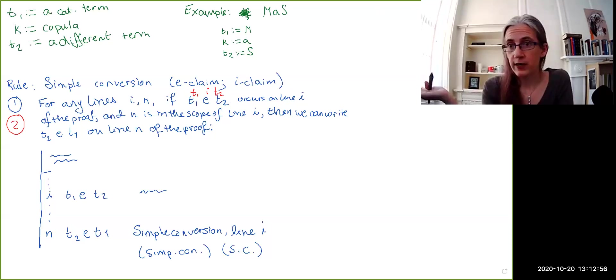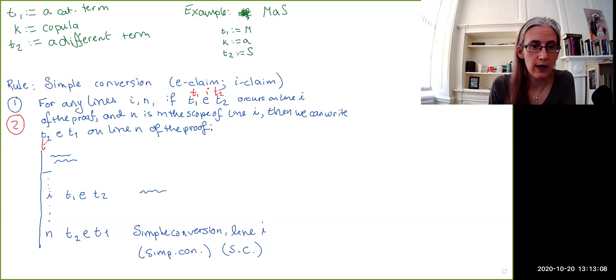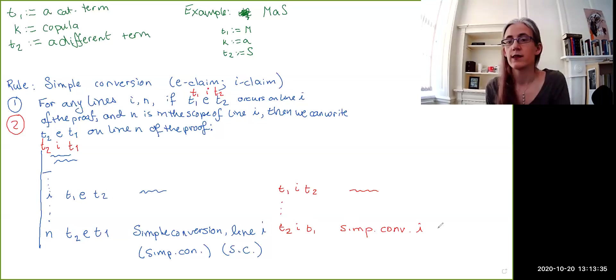Back to our other version. So, for any lines i and n, if an i proposition T1, i, T2 occurs on line i of the proof, and n is in the scope of line i, then we can write, so, again, we swap the order of the terms on line n of the proof. So, for instance, here, we might have T1, i, T2, with some sort of annotation. Then, down here at line n, we can do it with the order of the two terms swapped. And this, again, will be simple conversion citing line i.